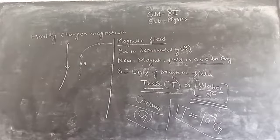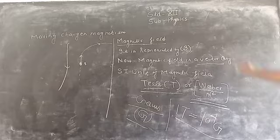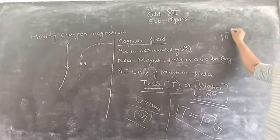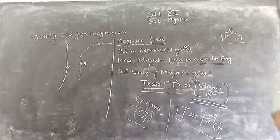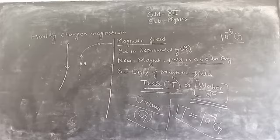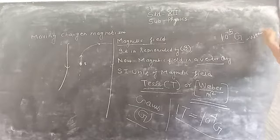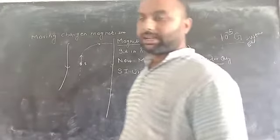Our Earth also acts as a magnet. The Earth's magnetism creates a magnetic field approximately equal to 10 to the power minus 5 Gauss. This is the magnetic field created by the Earth — a very small quantity, 10 to the power minus 5 Gauss, but this represents the power of the Earth.